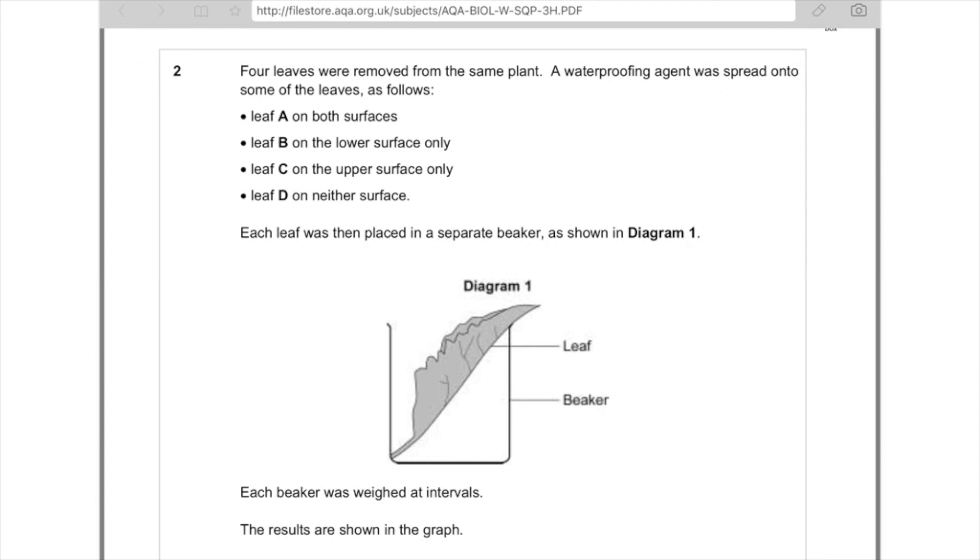Now we're going to take a look at a more practical question. These tend to be a bit more difficult. So four leaves were removed from the same plant. A waterproofing agent was spread onto some of the leaves as follows. And that waterproofing agent tends to be something like Vaseline. So they'll just spread it over either one side of the leaf, both sides of the leaf, or not at all. And that should affect how much water is being lost by transpiration. I just wanted to tell you that so you actually understand what's going on with this experiment.